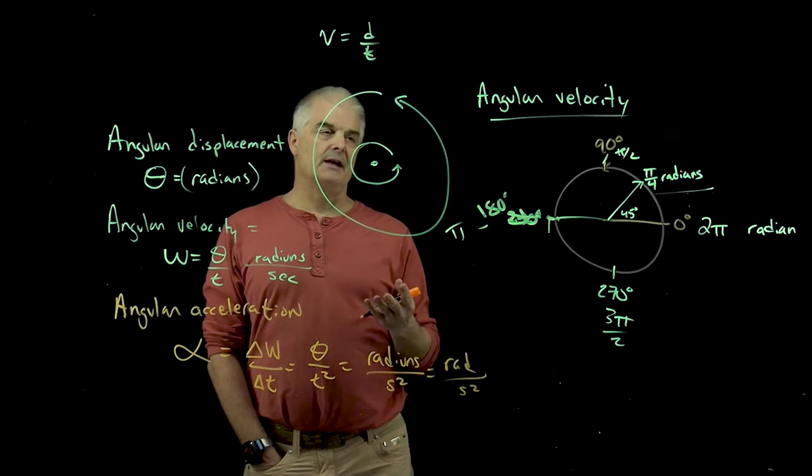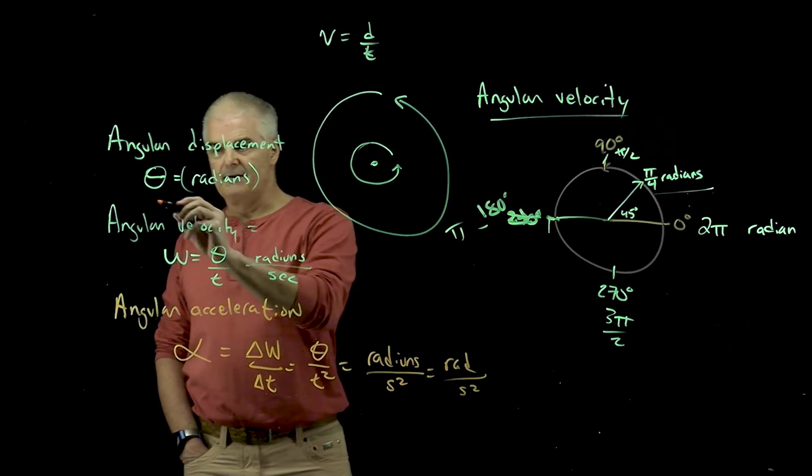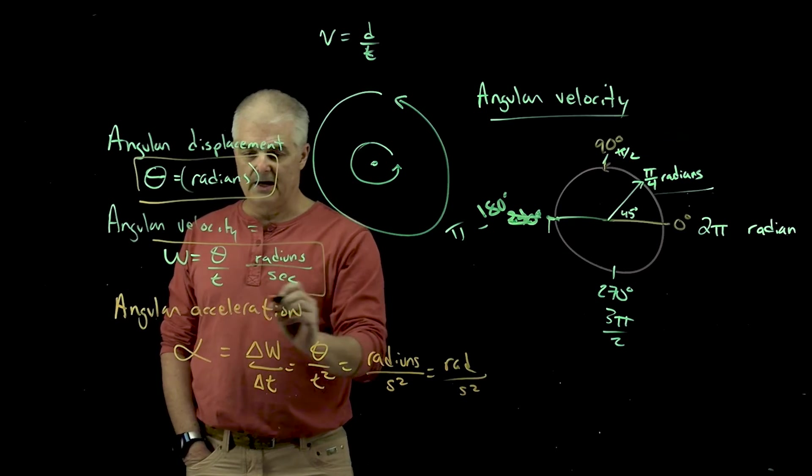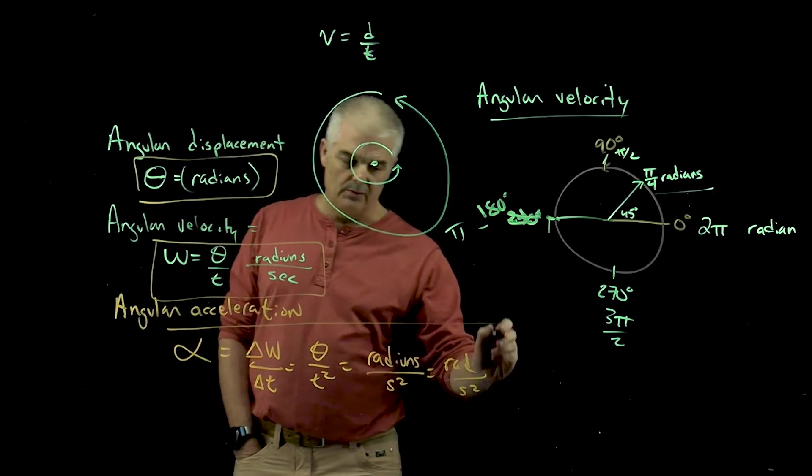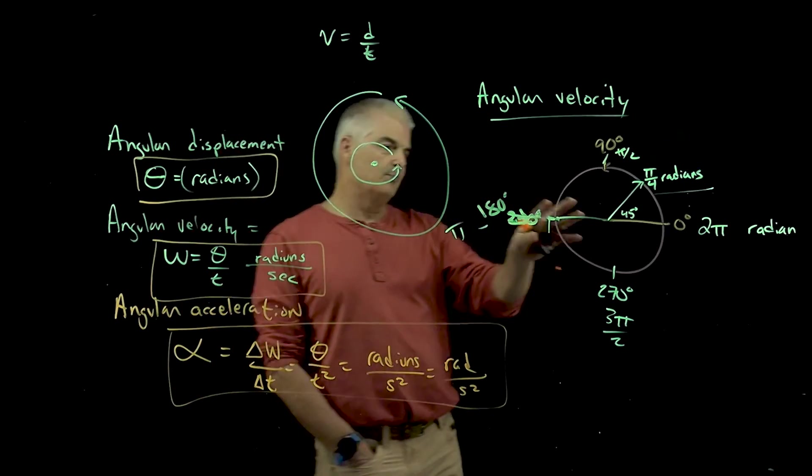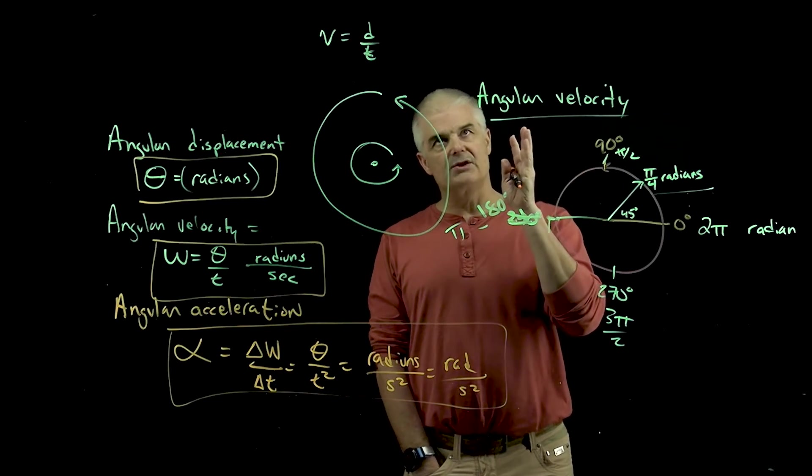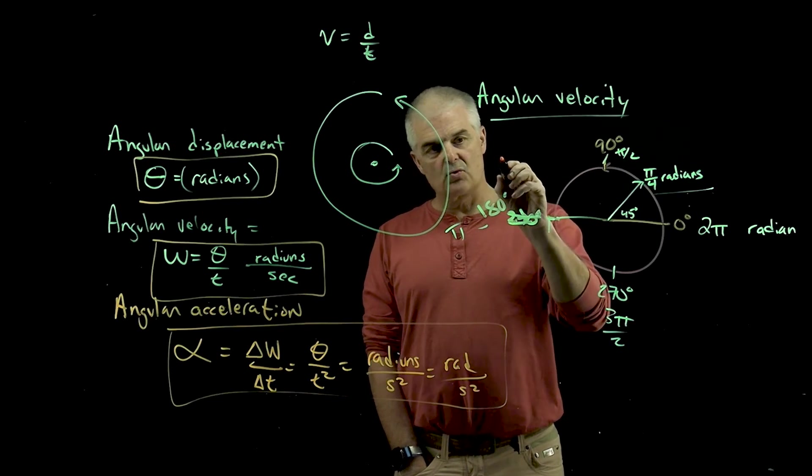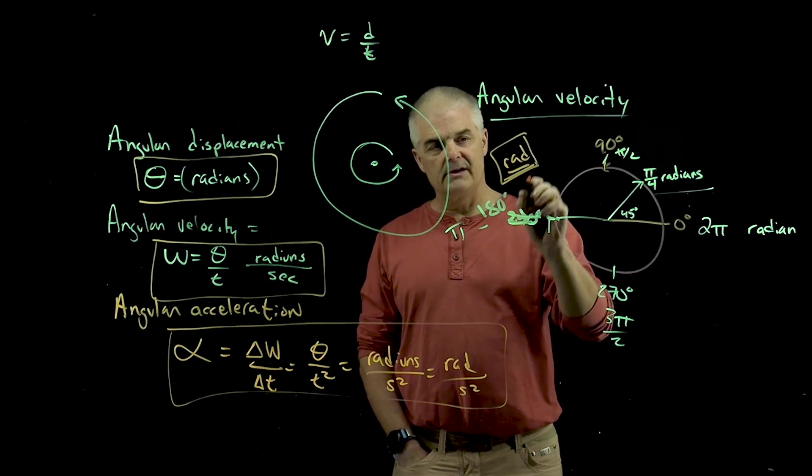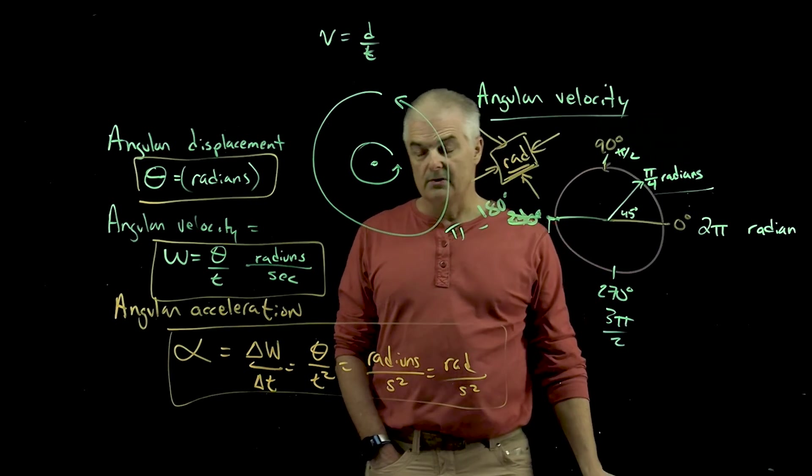Or we just say rad per second squared. So as you do problems tonight on the homework, as you're working on these questions, you're going to discover that you're really going to have these sort of three equations you have to play with. More on how we use this in a subsequent video. But when we have rotational motion, these are your three equations, but you've got to play the radian game. And down the road, you're going to want to probably get your calculator switched into radians. So depending on which calculator you have, you may need to convert it from degrees to radians in your calculator.